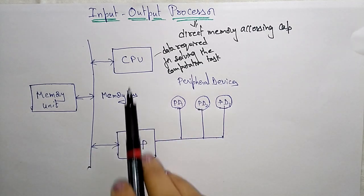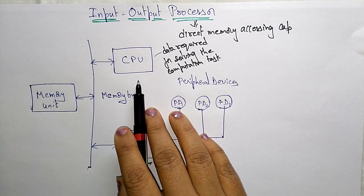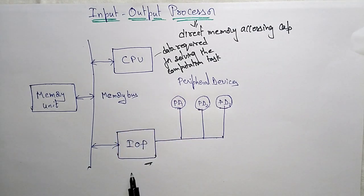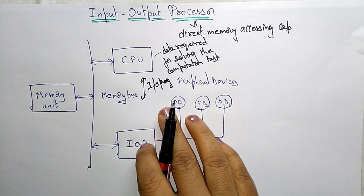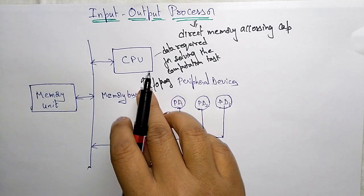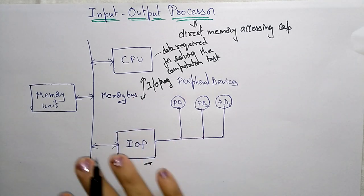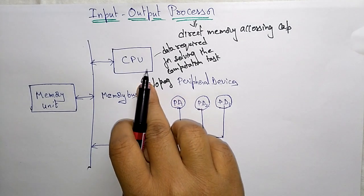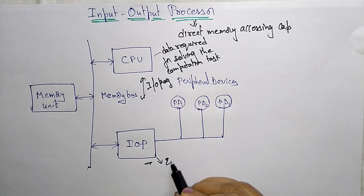Here is how the process works. First, the CPU assigns the task of initiating an IO program to the Input-Output Processor. Whatever IO program the CPU needs to execute, it assigns that work to the IOP. The Input-Output Processor then operates independently from the CPU and transfers data between peripherals and memory. The CPU assigns the task of initiating the operations, but it is the Input-Output Processor that executes the instructions.